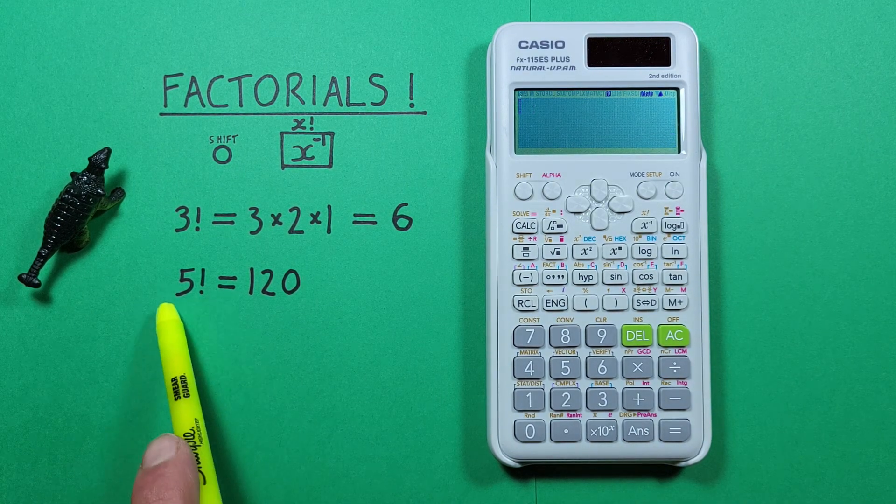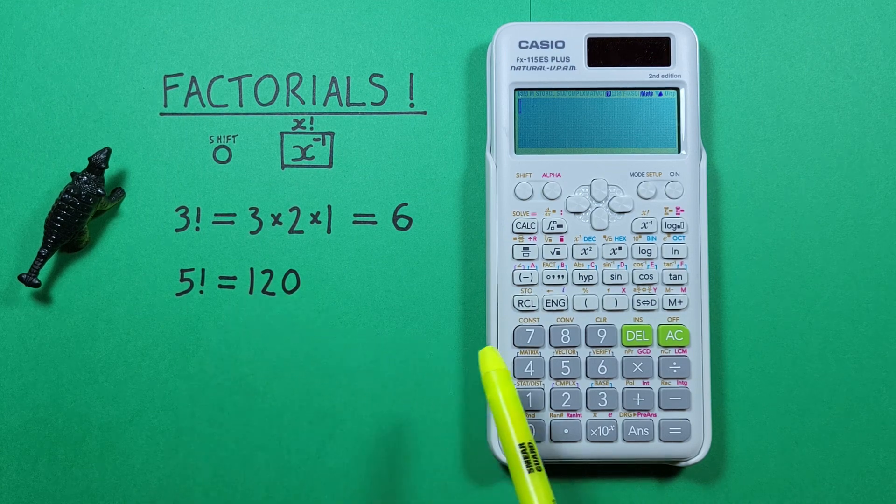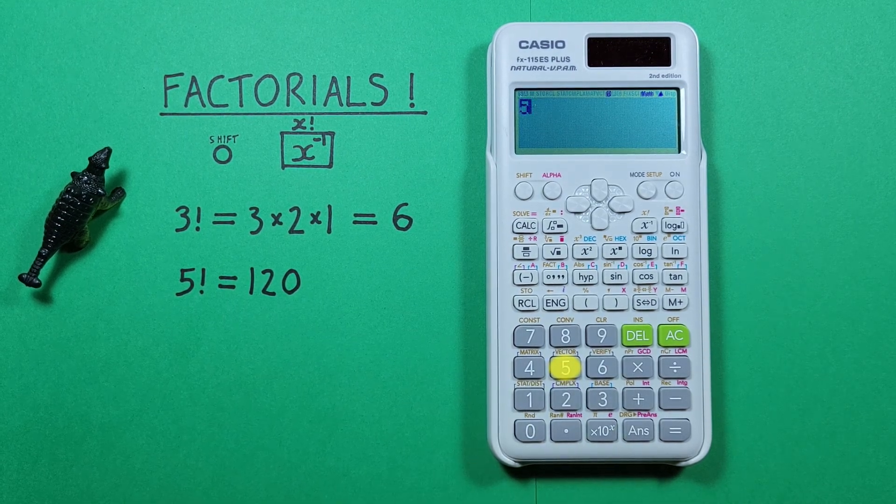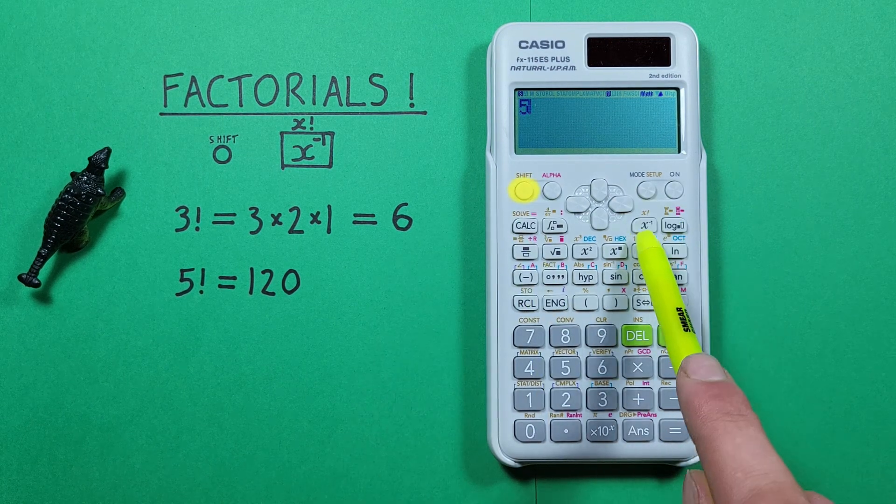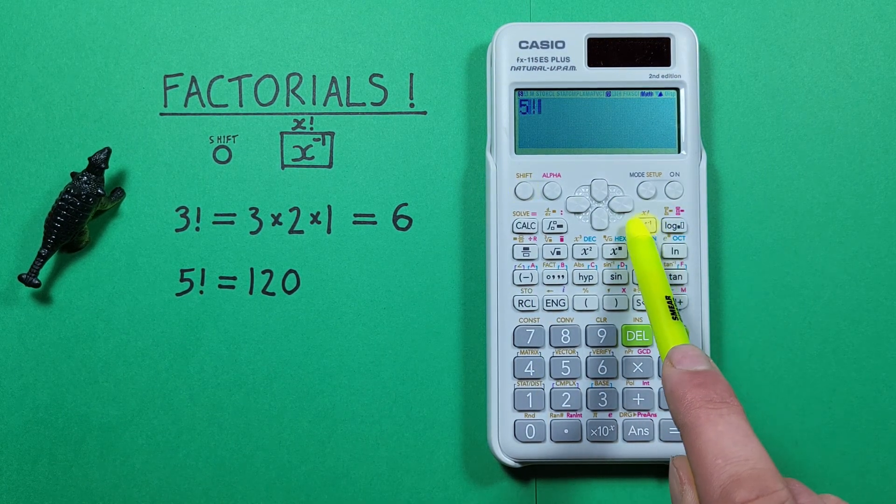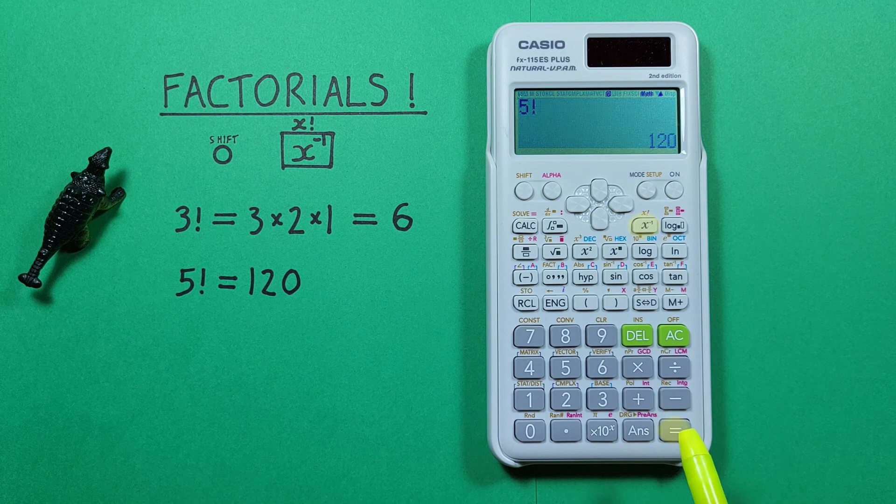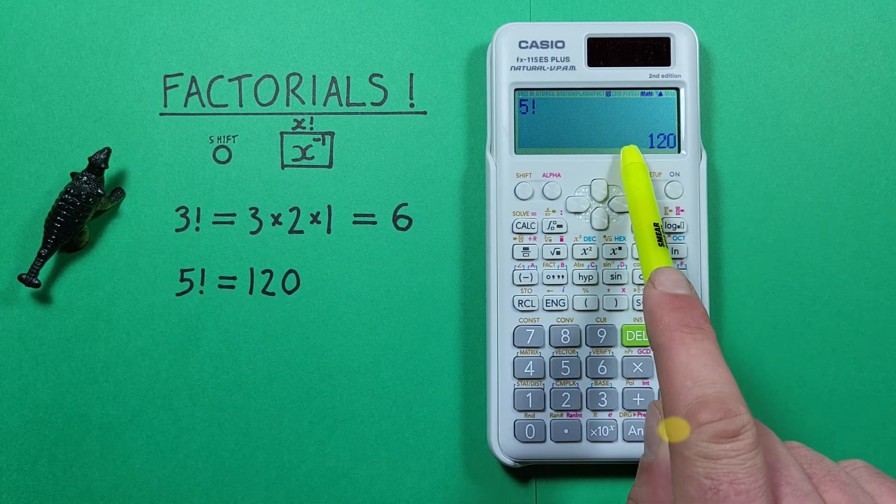Another example, if we want to get 5 factorial we start by entering the 5 and then pressing the shift and then the inverse key with the shift factorial again and equals and we see we get a result of 120.